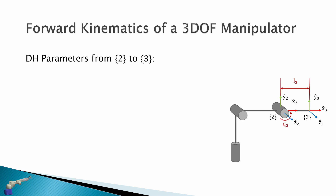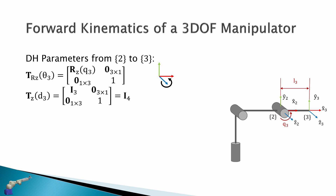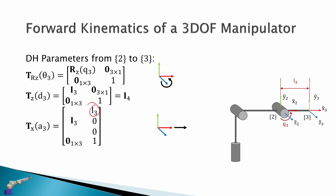From frame 2 to 3: again we rotate about z by q3. We translate across the z-axis by d3, but because these frames are not offset in z, this is 0. The next is a translation across x by link length L3. And finally a rotation about x by alpha, but these frames are already in alignment, so alpha is 0, which gives the identity matrix. We have now solved all transforms from j-1 to j for our 3-link manipulator.